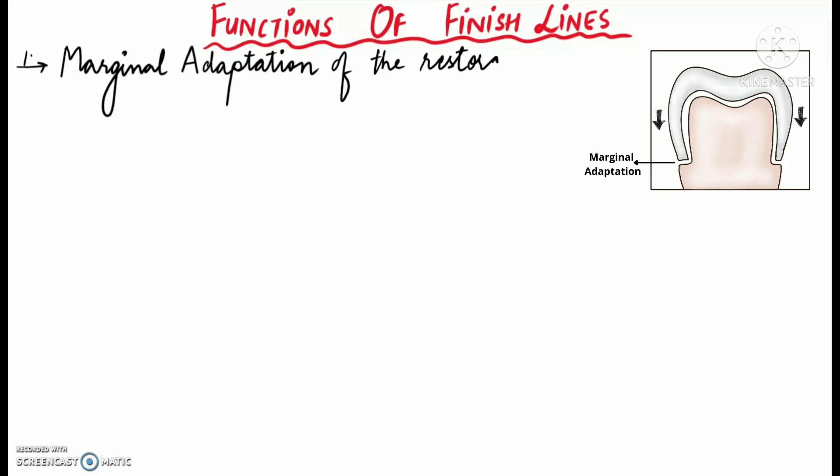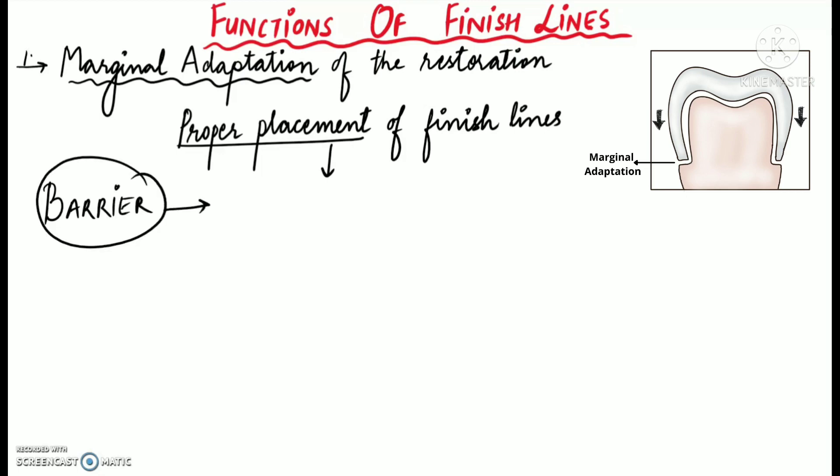Now let's discuss about the functions of finish lines. So a properly prepared finish line ensures predictable level of marginal adaptation of the restoration. Now let's see how a properly prepared finish line ensures adequate marginal adaptation of the restoration. So the thing is that proper placement of finish lines creates a barrier by preventing the cement to come in contact with the oral fluids.